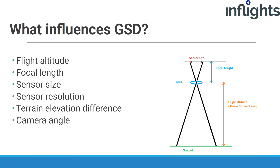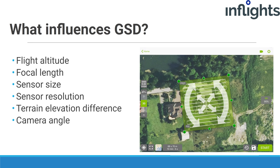The value of average GSD is influenced by several factors: flight altitude above ground level — the lower you fly, the lower the GSD; focal length of the camera lens — the longer the focal length, the lower the GSD; sensor size — the bigger the sensor, the better; sensor resolution — the more megapixels, the better; terrain elevation difference, which affects the camera-to-ground distance just like flight altitude; and camera angle — if the camera is tilted, the GSD value increases. To quickly calculate GSD, use the flight planning app for your drone and camera.